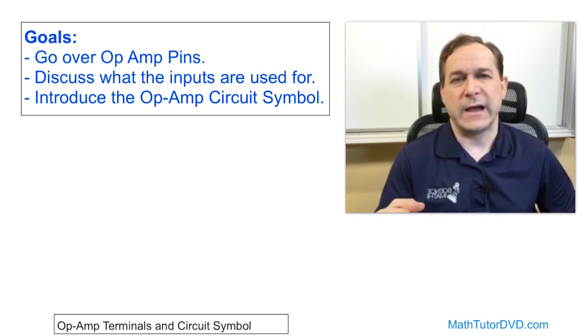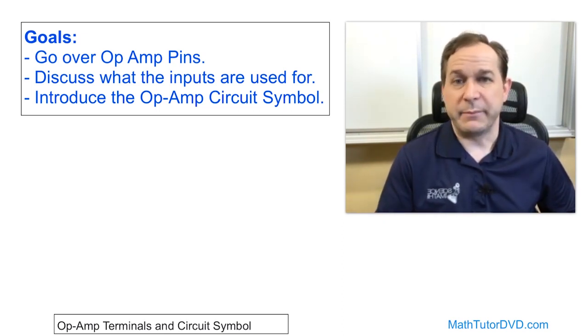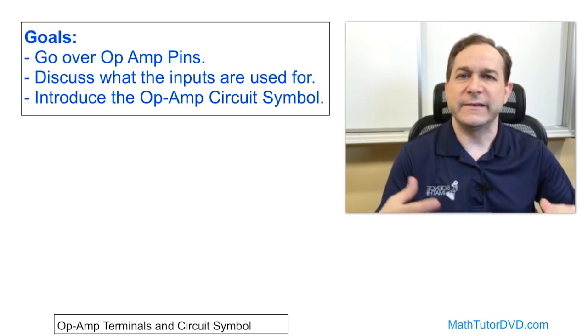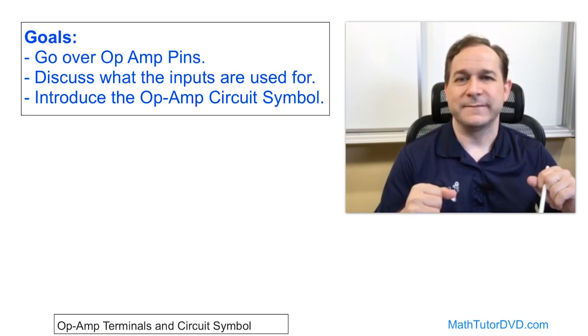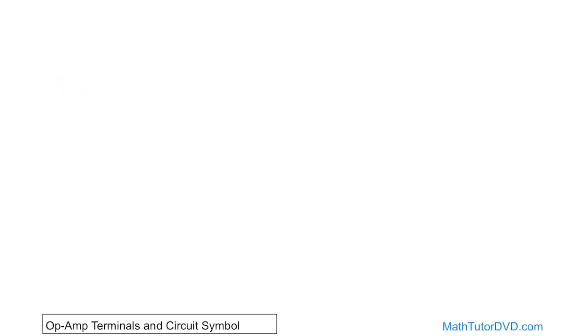We'll also be introducing the circuit symbol for the op amp, which at its most basic form is just a triangle. We've kind of shown you that before, but I need to discuss a little bit more about what's going on and how we actually use it. So let's get started. The typical pinout that you would see for a dual inline package, an actual physical package that you would see for an op amp, would go something like this. You have some terminals there. We have one, two, three, four, and then over here, five, number six, number seven, and number eight.